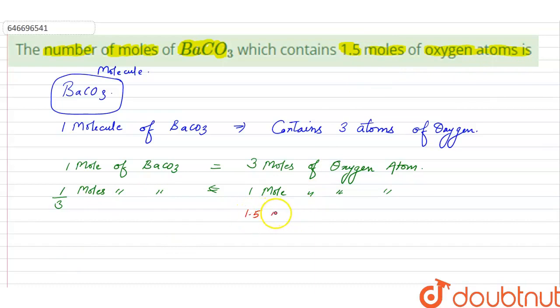So for 1.5 moles of oxygen atom we have 1 by 3 into 1.5 moles of BaCO3.